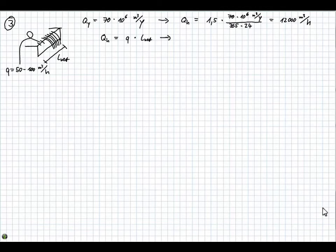I am going to use this now because we are going to rewrite the formula. We are interested in L net, so L net equals the hourly flow divided by the specific hourly flow.